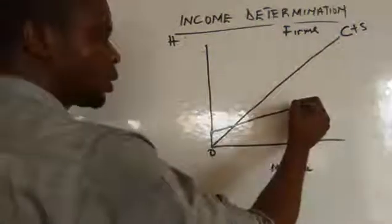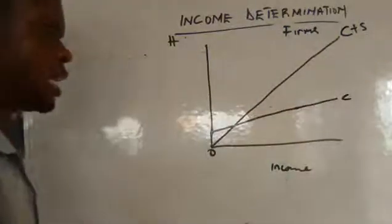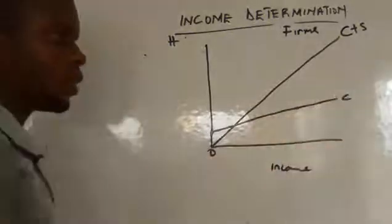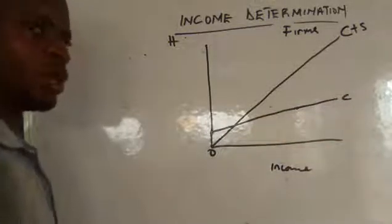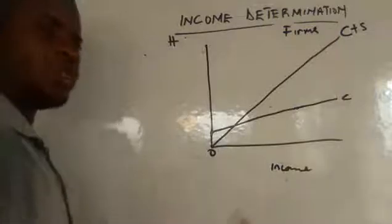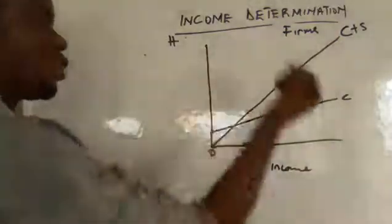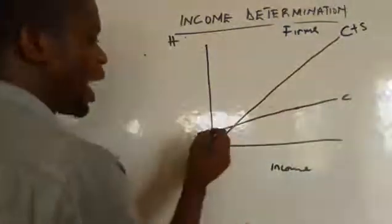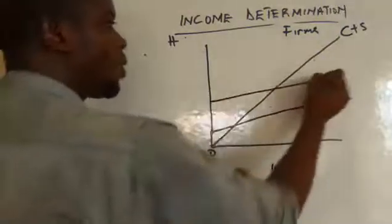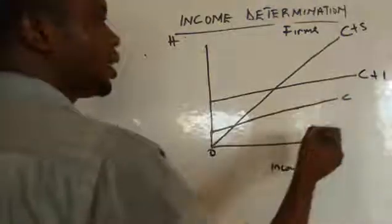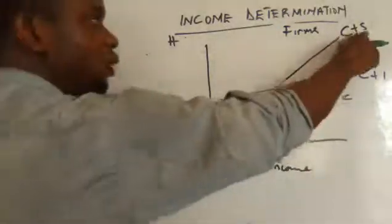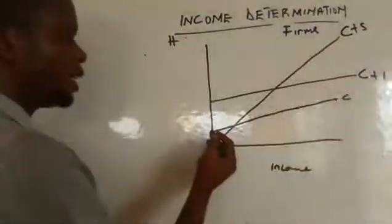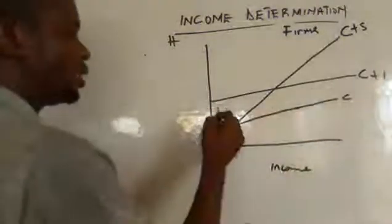This line is our consumption curve (C). For the demand for money, since we consume and then save, that saving goes to investment. So to get the investment demand line, we add I to consumption, giving us C plus I. That C plus I line is our aggregate demand, while C alone is for the household.